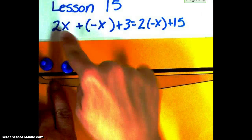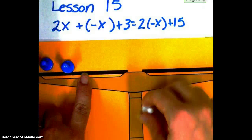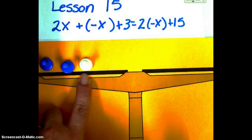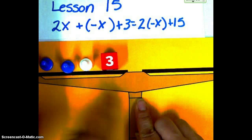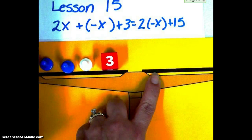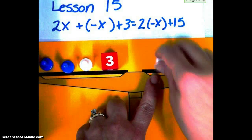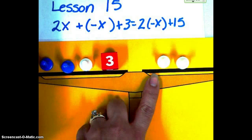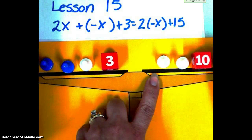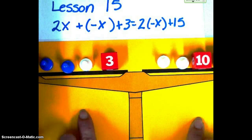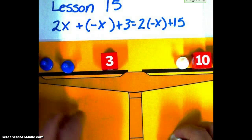So then we've got our 2x plus what we called our star before is now a negative x, plus 3, and on the other side we need 2 times the quantity negative x, plus 15. Alright, and then we're going to do our legal moves that we can. We'll take off our negative x's.